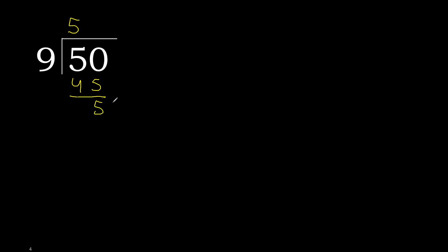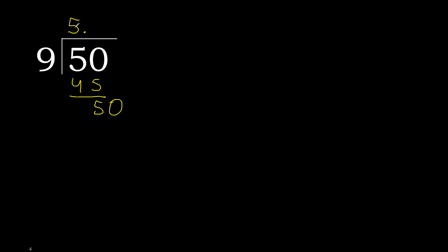There is no number, therefore always complete with 0 here. Add the decimal point. Bring down 50. 9 multiplied by 5 is 45, which is not greater.